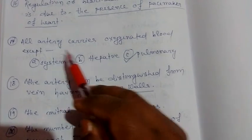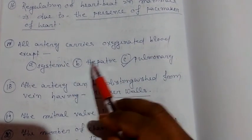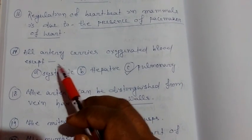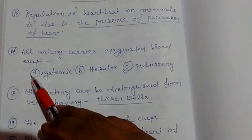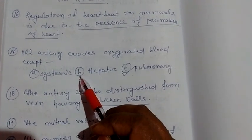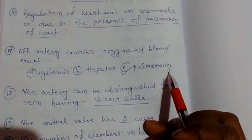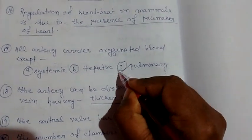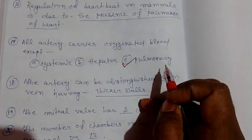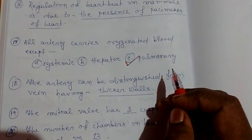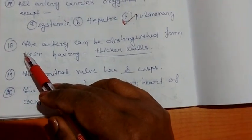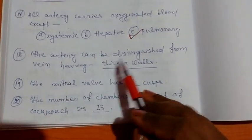Question number 17: all arteries carry oxygenated blood except — there are three options: A, systemic; B, hepatic; C, pulmonary. The correct option is C — the pulmonary artery carries deoxygenated blood while all other arteries carry oxygenated blood.